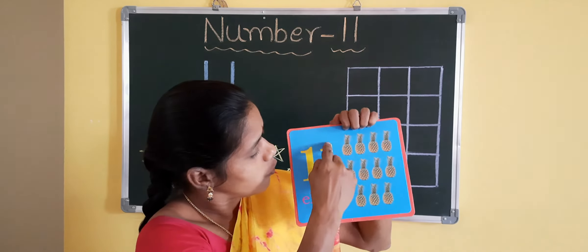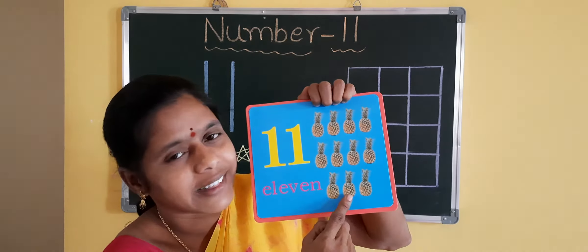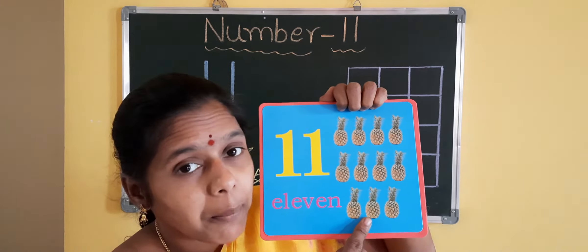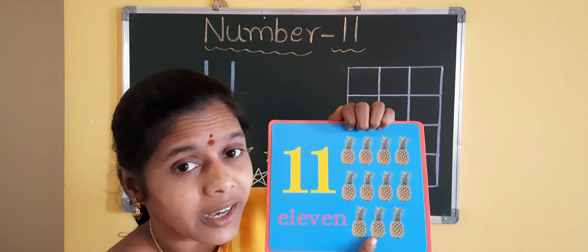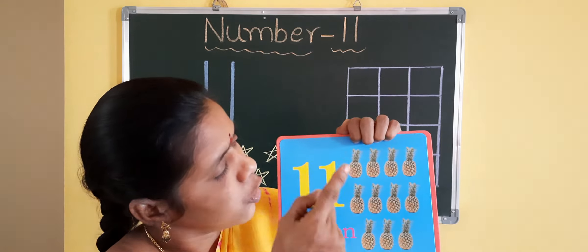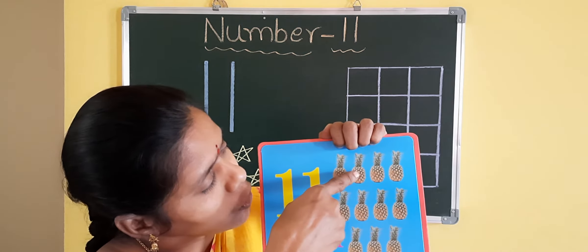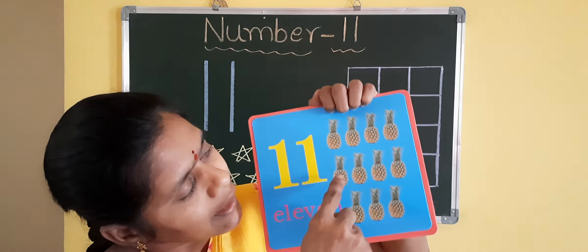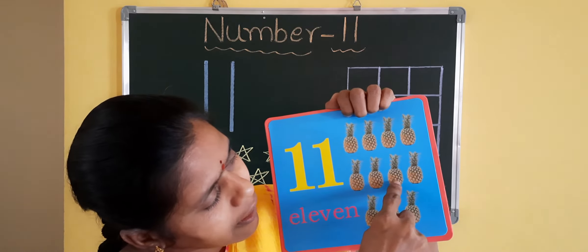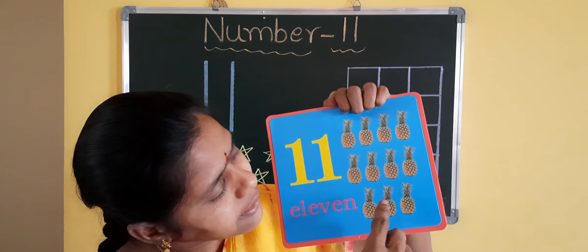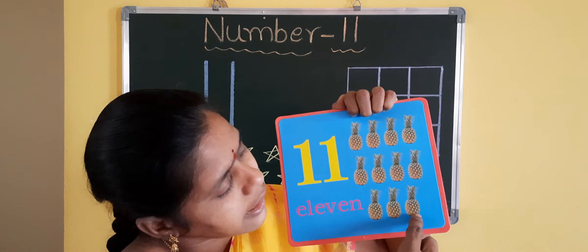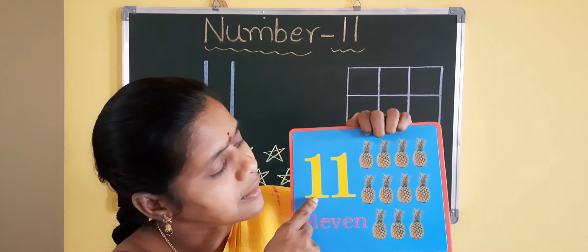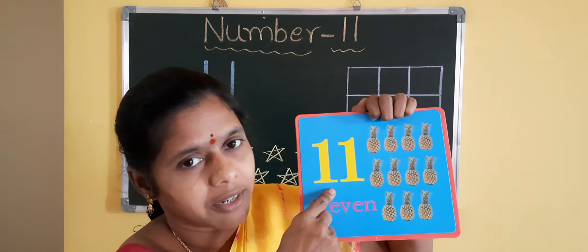11 — 1, 1, 11. What are these? Yes, these are pineapples. How many pineapples can you see here? Count the pineapples. 1, 2, 3, 4, 5, 6, 7, 8, 9, 10, 11. You can see the 11 pineapples. This is number 11.